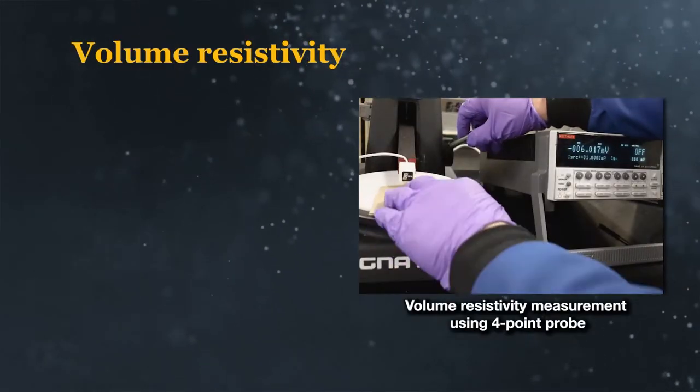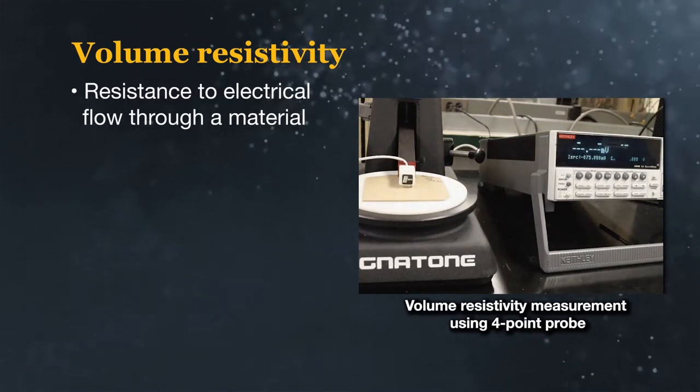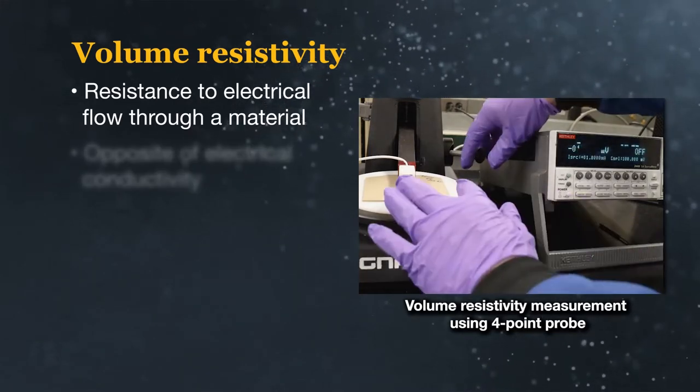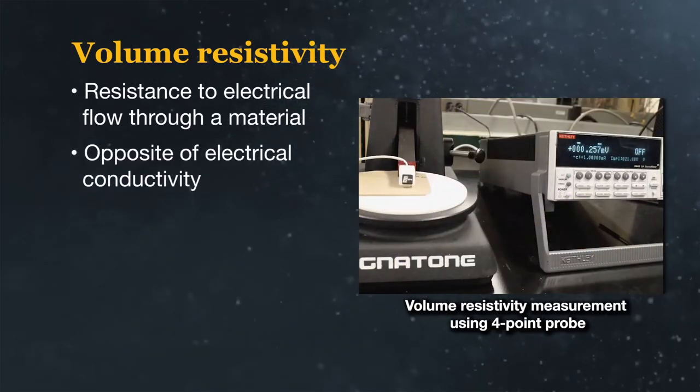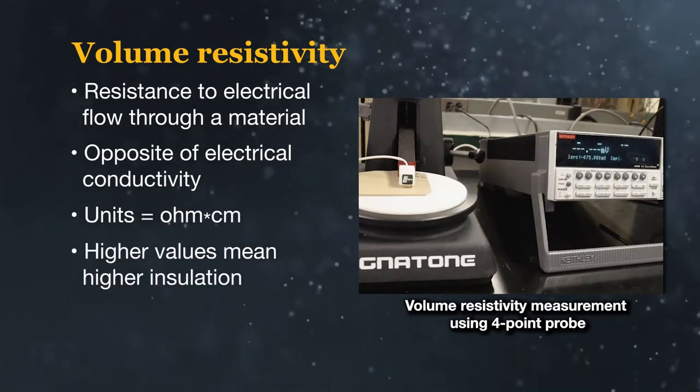The first property we will discuss is volume resistivity. Volume resistivity is the resistance of a material to allow electricity to flow through it. It is the opposite of electrical conductivity. Volume resistivity is measured in units of ohm centimeters.